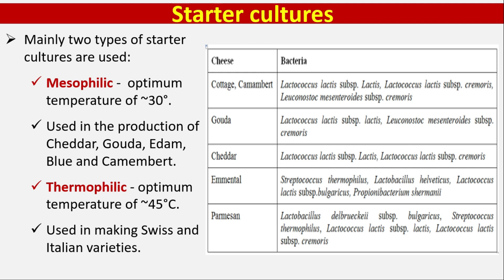For Cottage and Camembert cheese, starter cultures used are Lactococcus lactis subsp. lactis, Lactococcus lactis subsp. cremoris, and Leuconostoc mesenteroides subsp. cremoris. For Gouda: Lactococcus lactis subsp. lactis and Leuconostoc mesenteroides subsp. cremoris. For Cheddar: Lactococcus lactis subsp. lactis and Lactococcus lactis subsp. cremoris.